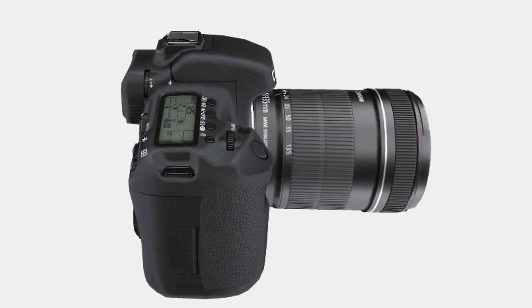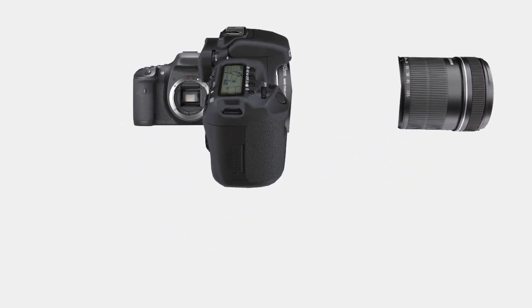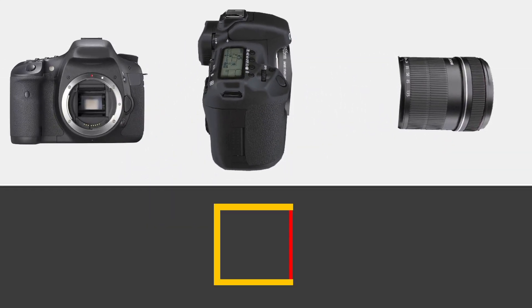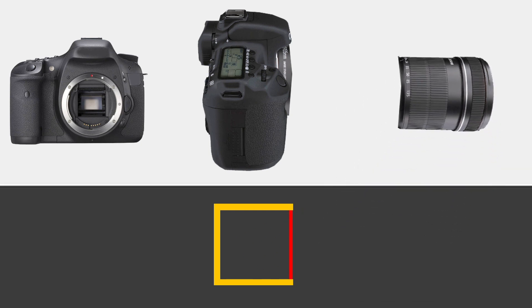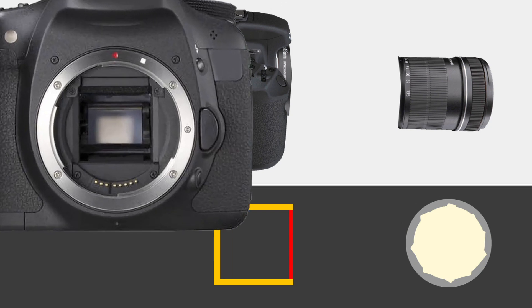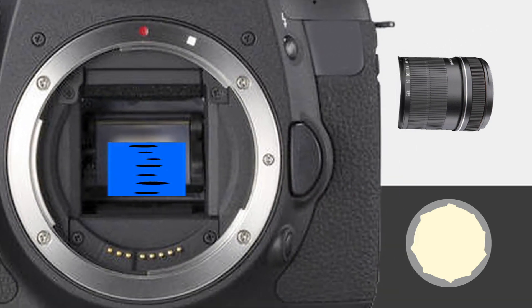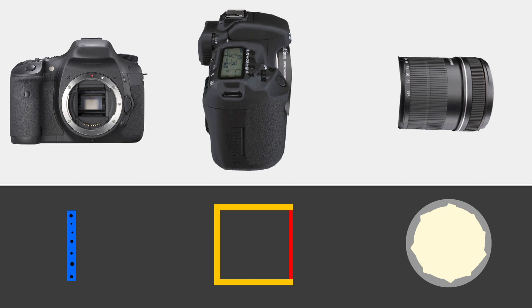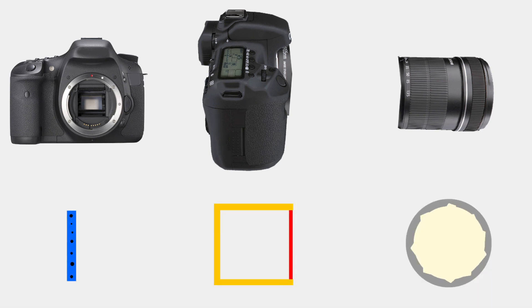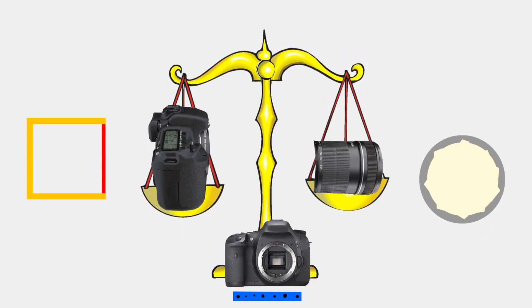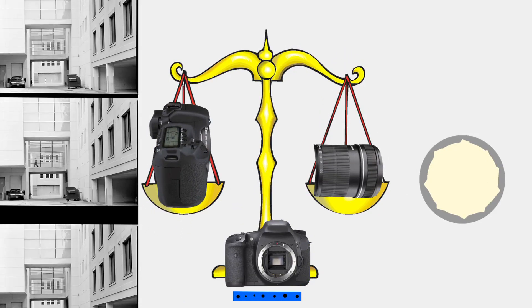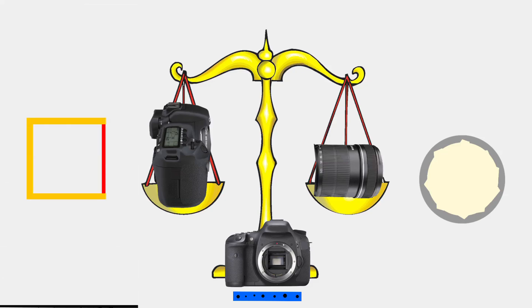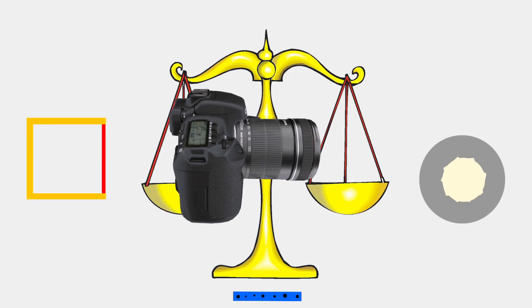The first thing we have to understand with the camera is that there are three parts: the shutter speed or shutter box, the aperture also known as the f-stop, and the film speed or the ISO. These three things interact with each other like a scale — you have to balance each one to get the image you need.